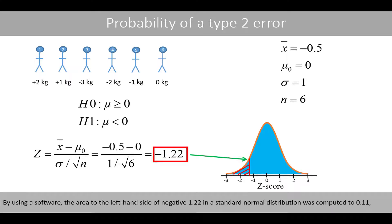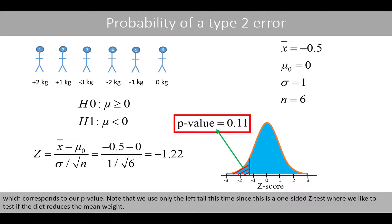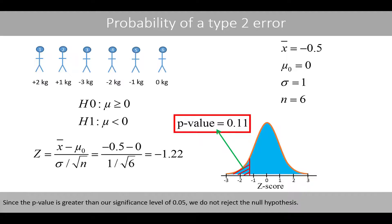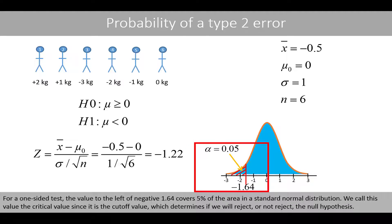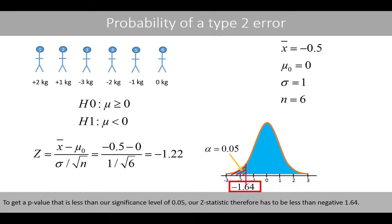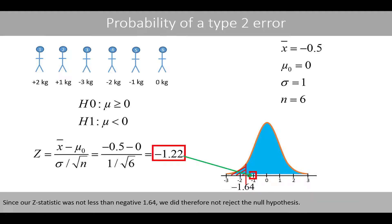By using software, the area to the left-hand side of negative 1.22 in a standard normal distribution was computed to 0.11, which corresponds to our p-value. Note that we only used the left tail this time, since this is a one-sided z-test, where we like to test if the diet reduces the mean weight. Since the p-value is greater than our significance level of 0.05, we do not reject the null hypothesis. For a one-sided test, the value to the left of negative 1.64 covers 5% of the area in the standard normal distribution. We call this value the critical value, since it is a cut-off value which determines if we will reject or not reject the null hypothesis. To get a p-value less than 0.05, our z-statistic therefore has to be less than negative 1.64. Since our z-statistic was not less than negative 1.64, we did therefore not reject the null hypothesis.